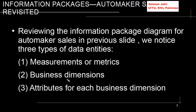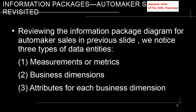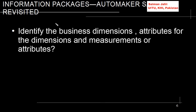We also noticed the business dimensions. What were the business dimensions? Time, product, payment method, customer demographics, and dealer. And these were the categories or attributes of the dimensions. Remember that time had a hierarchical nature that we discussed. Payment method had these attributes, customer demographics had these attributes, dealer has these attributes and so on. So these were the three things: we identified the business dimensions, attributes of the dimensions, and measurements.